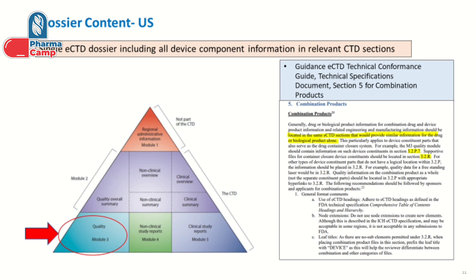Basically, a single eCTD dossier needs to be submitted, including all device component information in the relevant CTD sections. Information about the device part needs to be included in the relevant CTD section — for example, development information in the development CTD section (P2), stability information in the stability section (P8), and so on. I have also provided the FDA guidelines which mention which information should be included in which part of the dossier, so this makes your job easier.